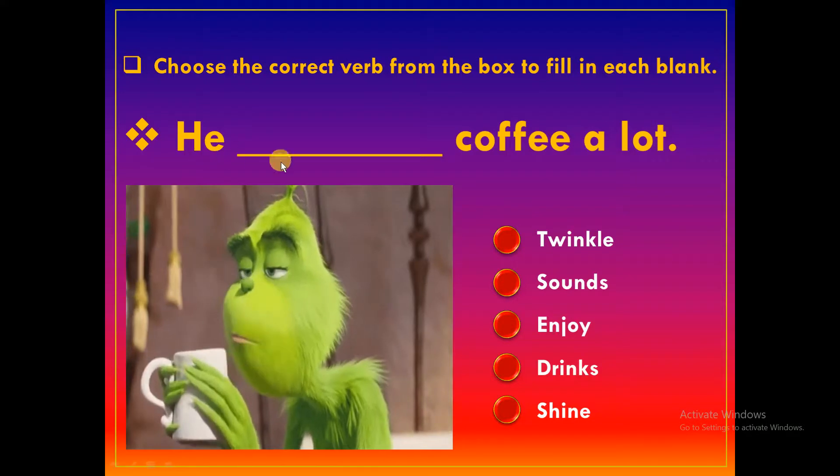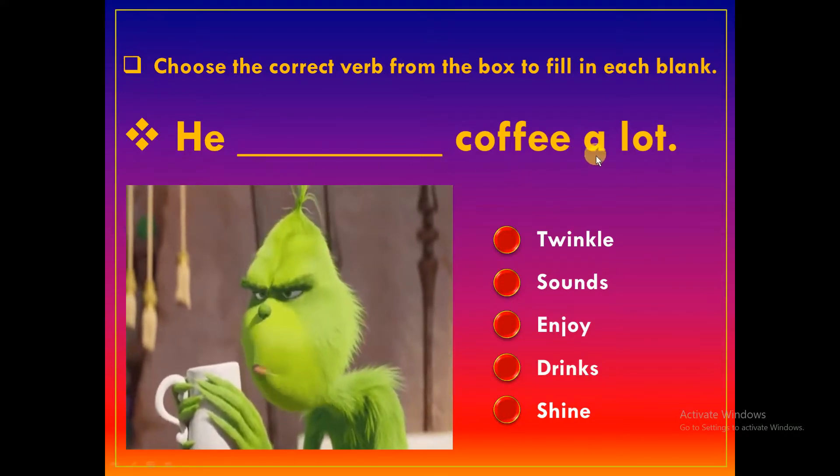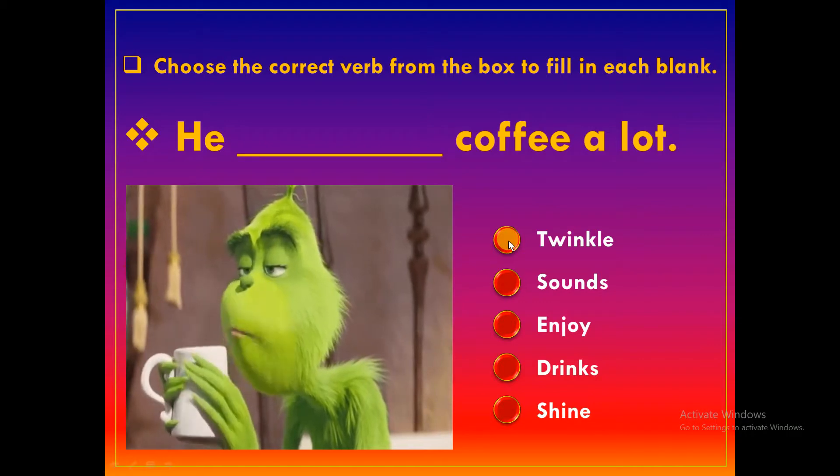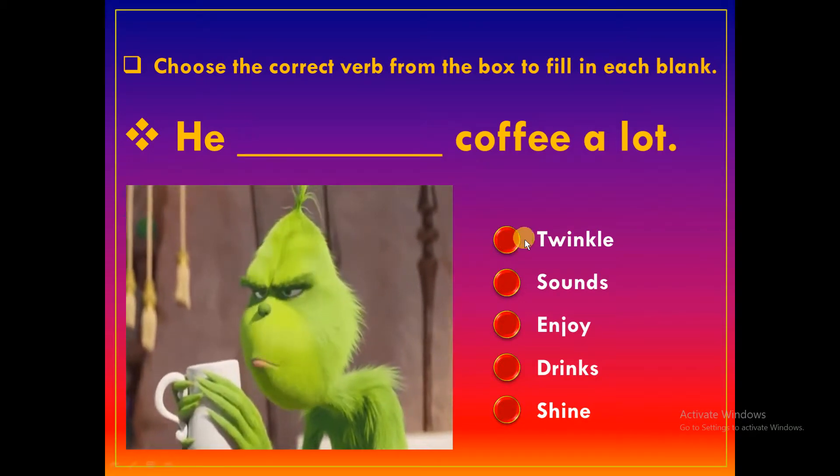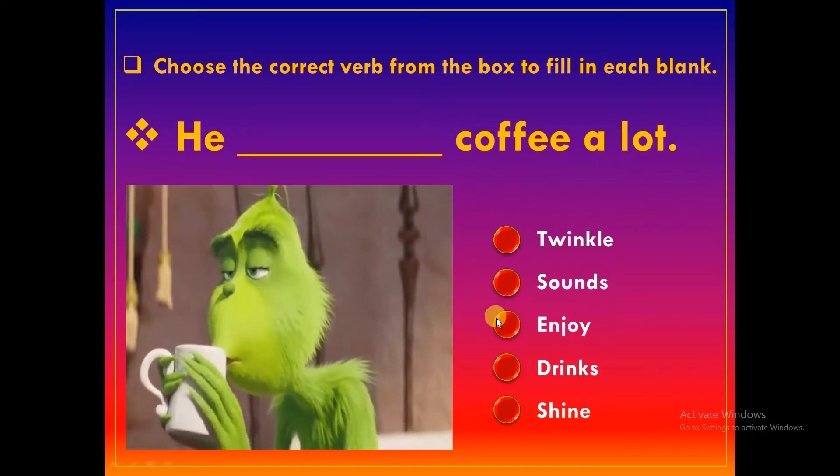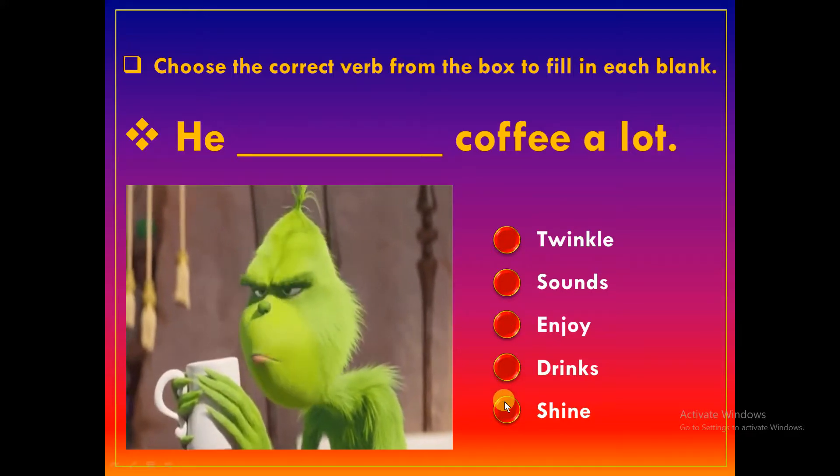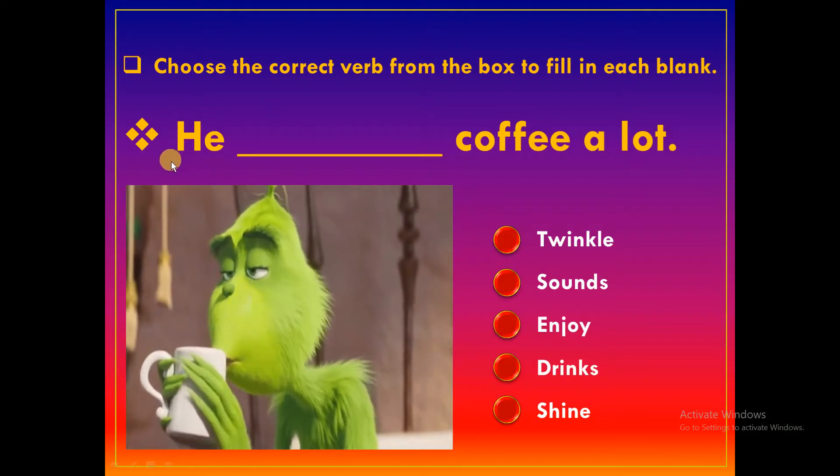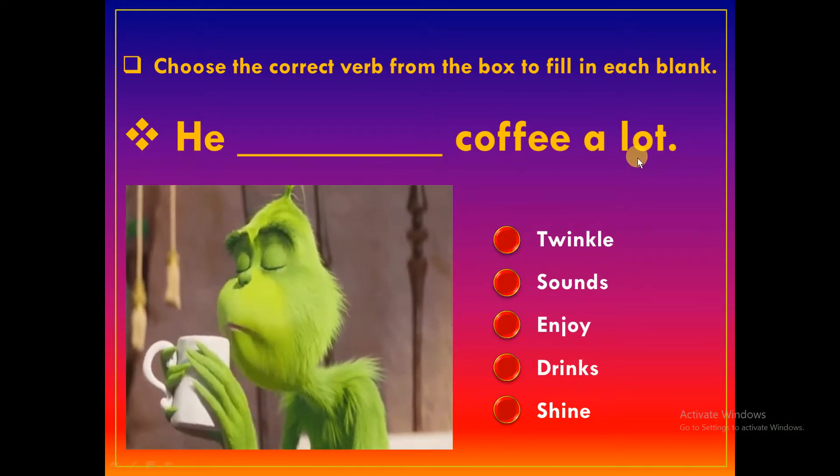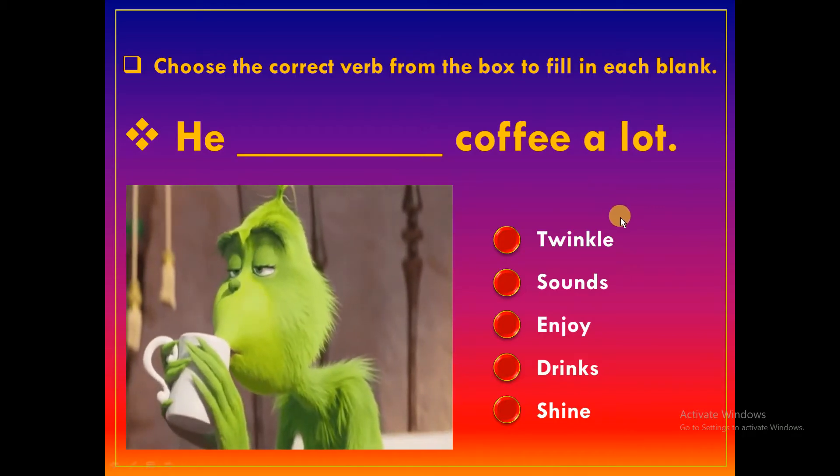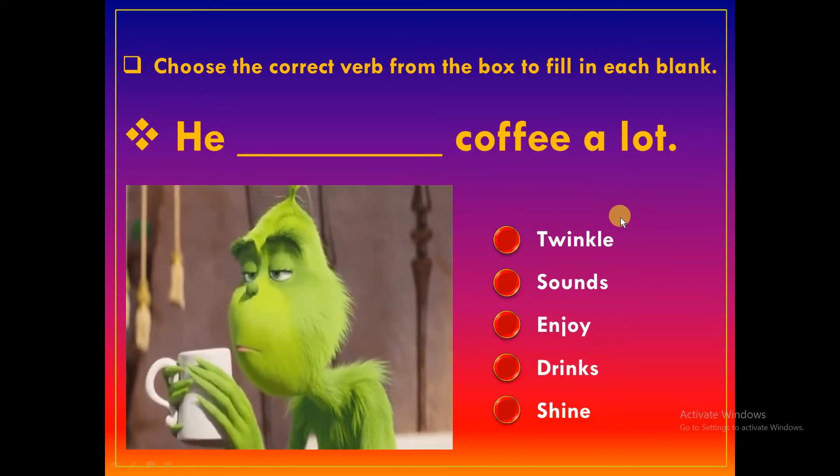Next, he blank coffee a lot. Again, look at the option: twinkle, sound, enjoy, drinks, shine. What will I say in the blank? He blank coffee a lot. So now you can see the option in the comment box. It will come up.